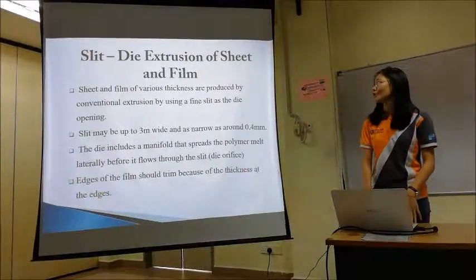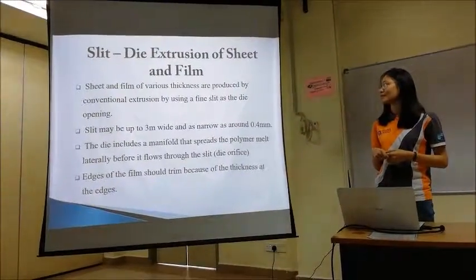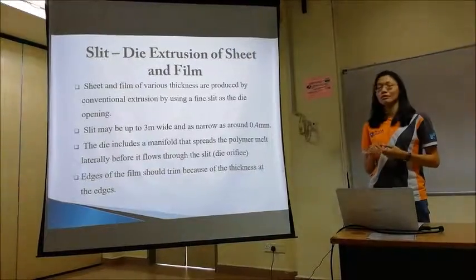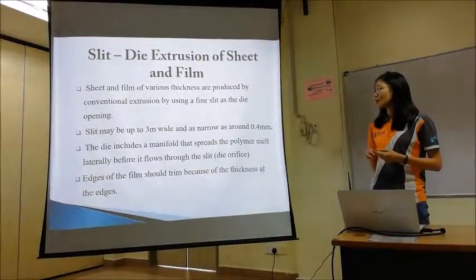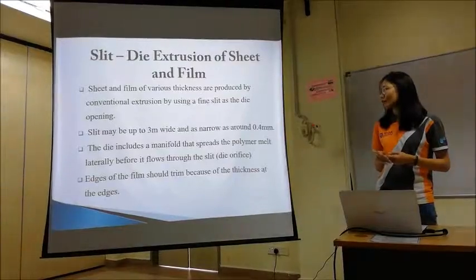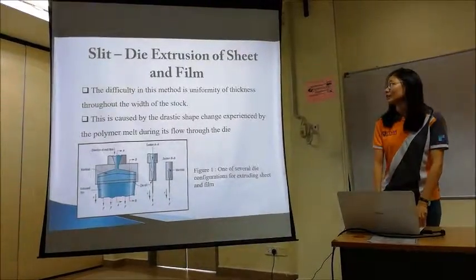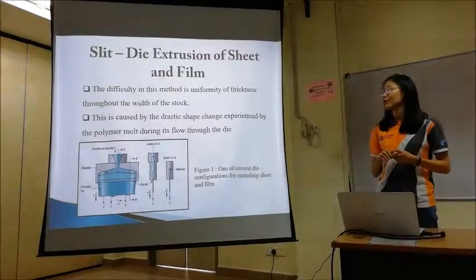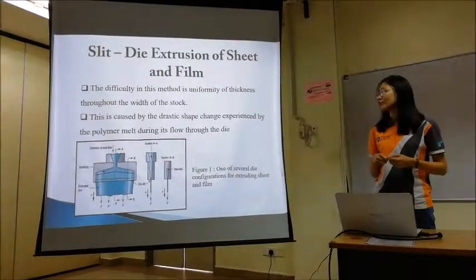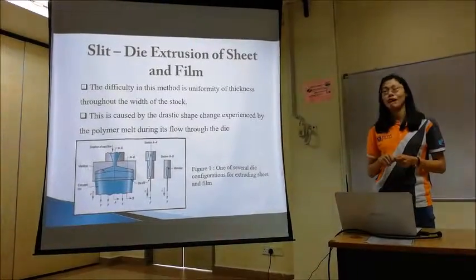For the first one, slit-die extrusion of sheet and film: sheet and film of various thicknesses are produced by conventional extrusion using a flat slit as the die opening. The slit may be up to 3m wide or as narrow as around 0.4mm. The die includes a manifold that spreads the polymer melt laterally before it flows through the slit. The edges of the film should be trimmed because of the greater thickness at the edges. A difficulty with this method is achieving uniformity of thickness throughout the width of the stock, caused by the drastic shape change experienced by the polymer melt during its flow through the die.